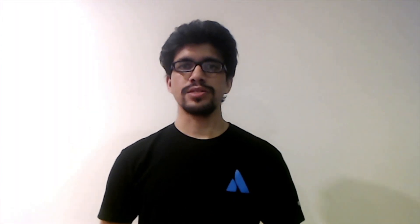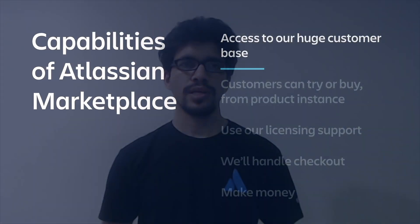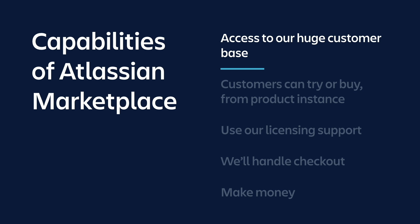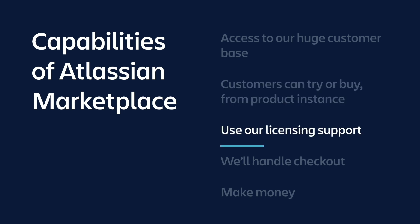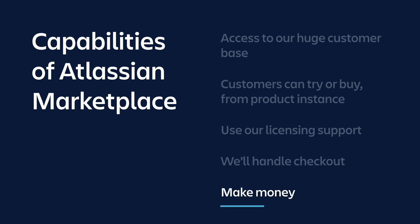The Atlassian Marketplace platform provides convenient means for you to distribute and sell your apps for Atlassian products. Through our marketplace, you get access to Atlassian's large customer base. Customers can try or buy your app right from their product instance like Jira or Confluence. You can take advantage of our licensing support, Atlassian takes care of the checkout process, and it's a great way to make money by participating in the business of selling apps.